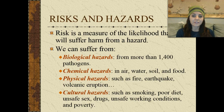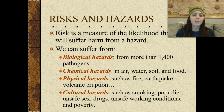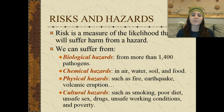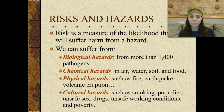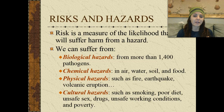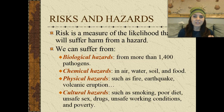Biological hazards have more than 1,400 different types of pathogens that can affect us. Chemical hazards include different types of pollutants that we can find in the air, the water, the soil, and our food. Physical hazards include fires, earthquakes, volcanic eruptions, and mudslides.